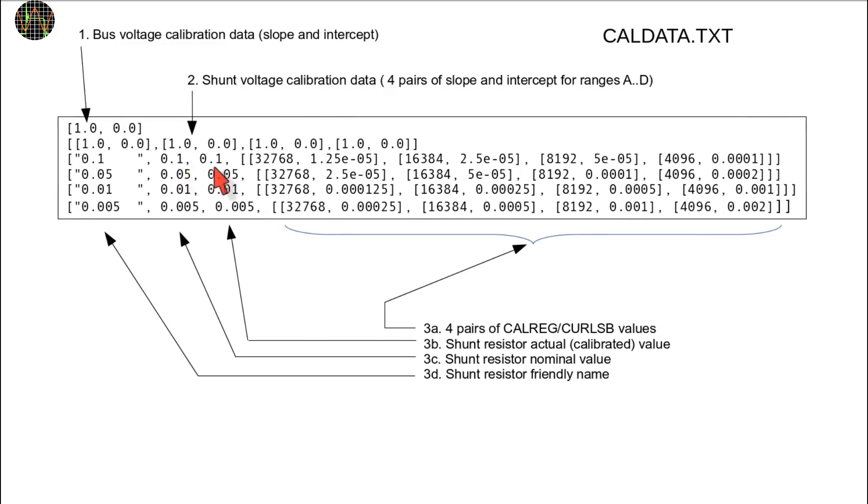New is the next field which is the actual value in ohms, that is the value the resistor actually has. Don't worry about this, this is filled in by Powermon when doing calibration. The rest of the shunt resistor definitions are the four pairs of Cal-Rec and Cur-LSB values.